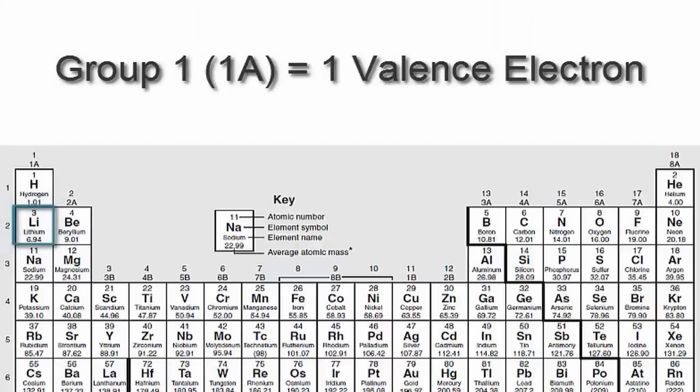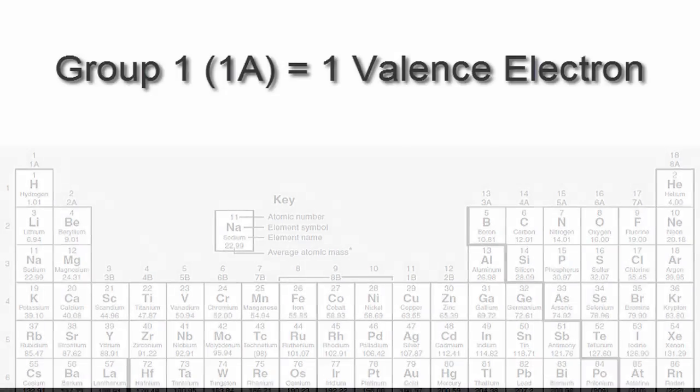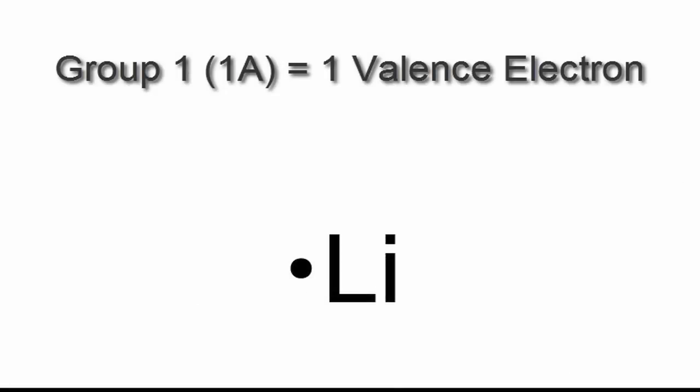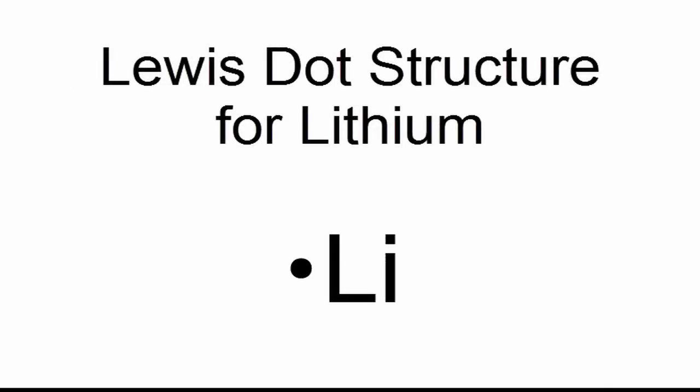Lithium is in group 1 or 1A. That means it has one valence electron, and we'll put that one valence electron right next to the element symbol, Li, for lithium. So that's the Lewis dot structure for lithium. This is Dr. B, and thanks for watchin'.